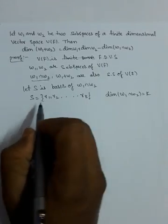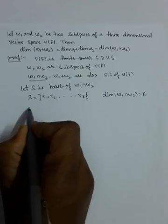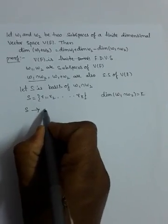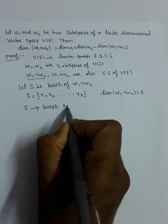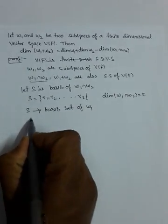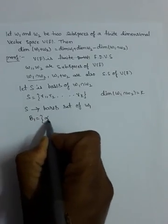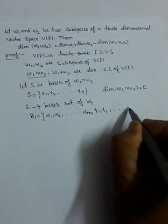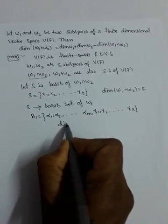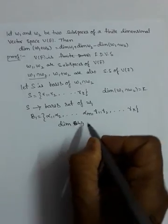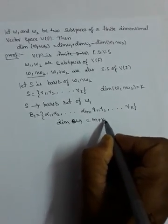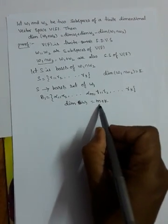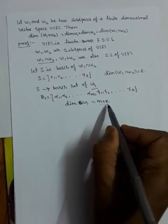Now I am using the extension theorem. I am extending S as a base set of w1. That is B1 equals {alpha1, alpha2, ..., alpham, gamma1, gamma2, ..., gammak}. Therefore the dimension of w1 is m plus k, because the base contains m alphas and k gammas. Therefore the total number of elements in B1 is m plus k, and dimension of w1 equals m plus k.